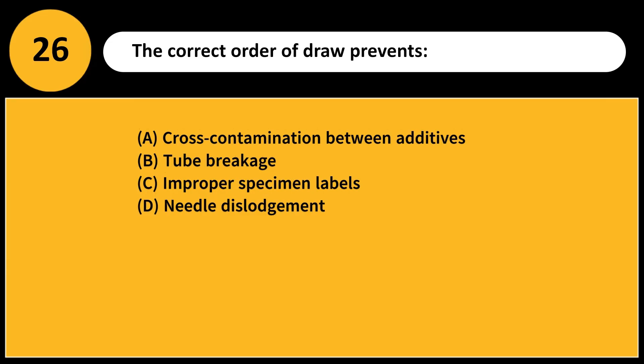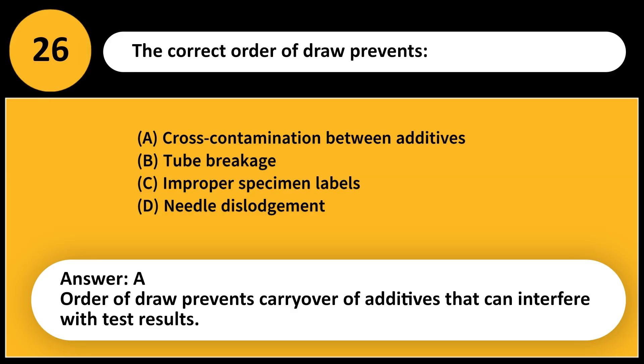The correct order of draw prevents: A. Cross-contamination between additives. B. Tube breakage. C. Improper specimen labels. D. Needle dislodgement. Answer: A. Order of draw prevents carryover of additives that can interfere with test results.